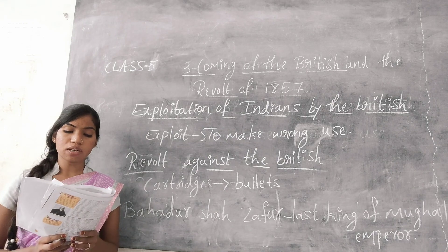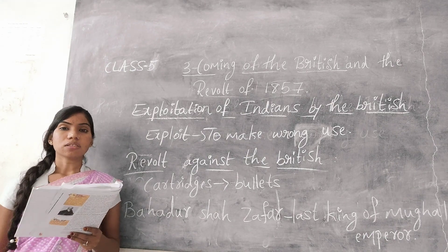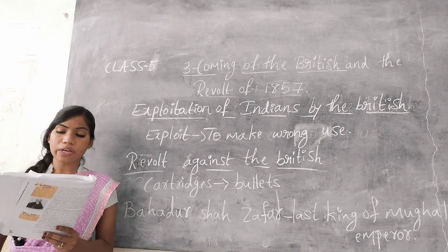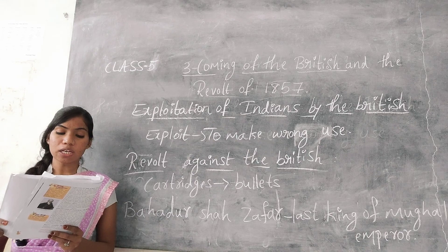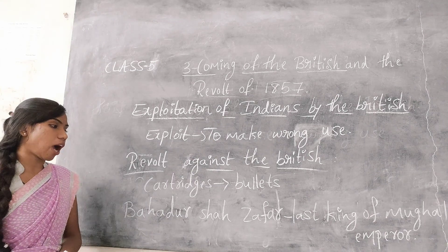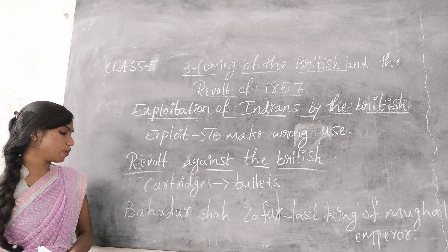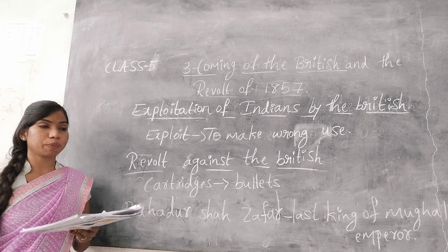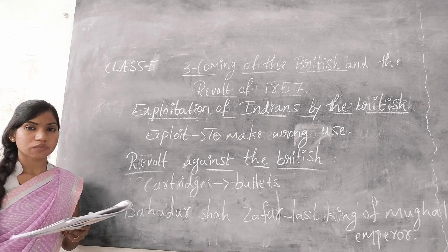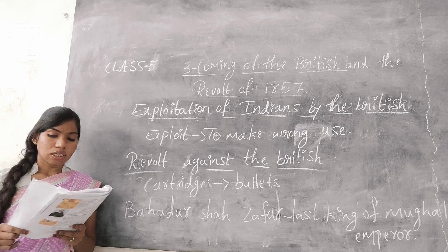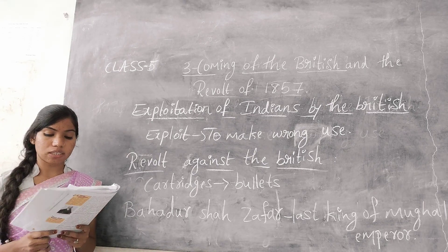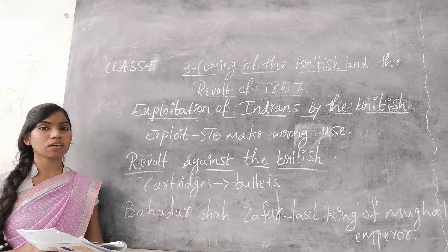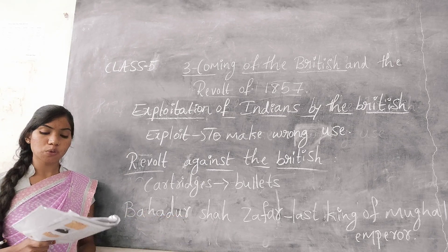His two sons were killed, bringing the glorious Mughal Empire to an end. After Bahadur Shah Zafar, the Mughal Empire came to an end.